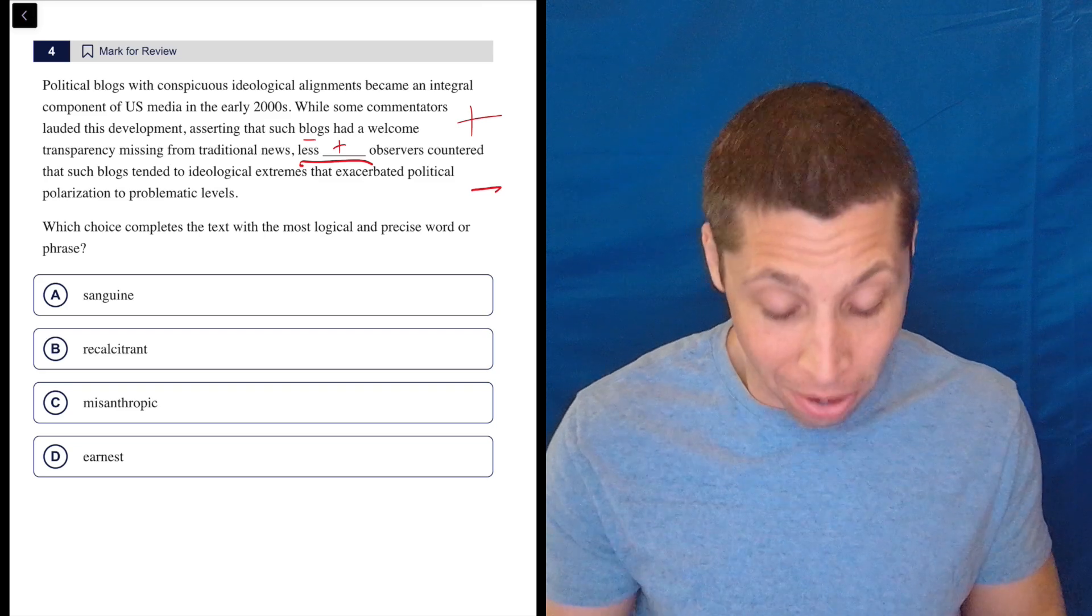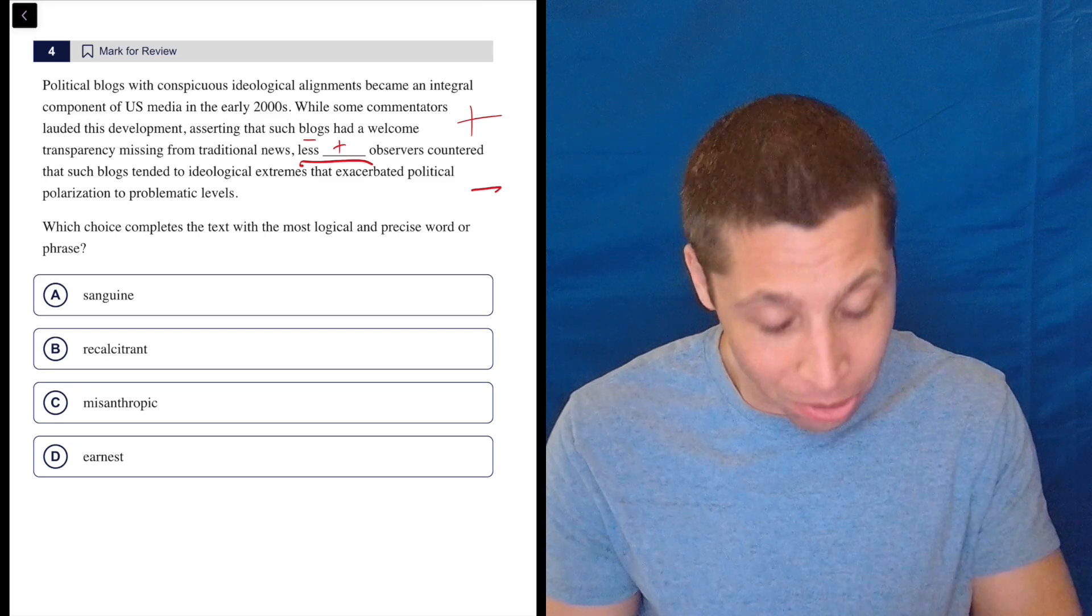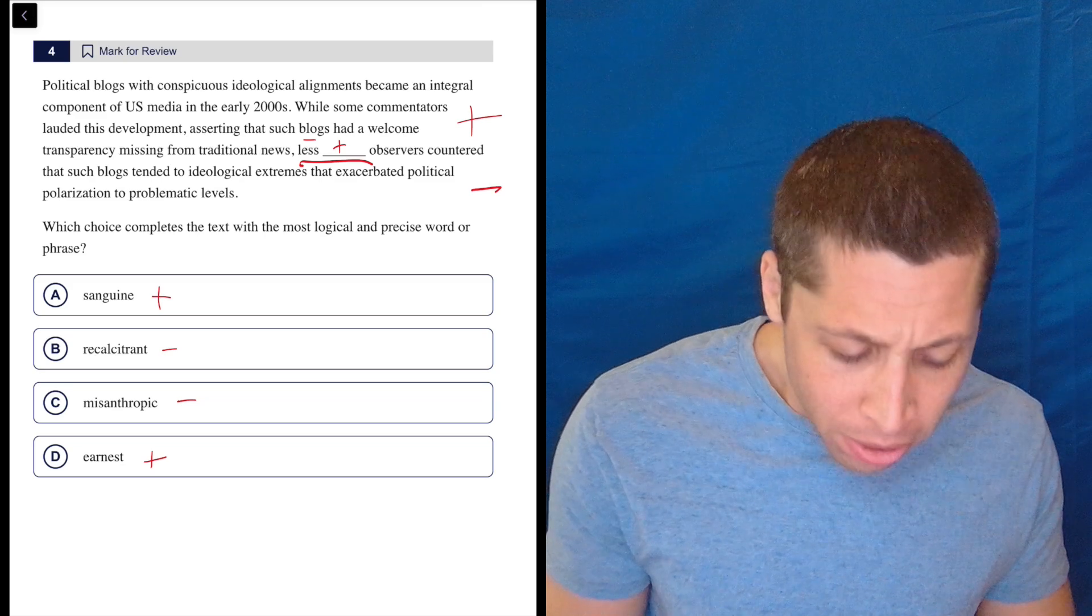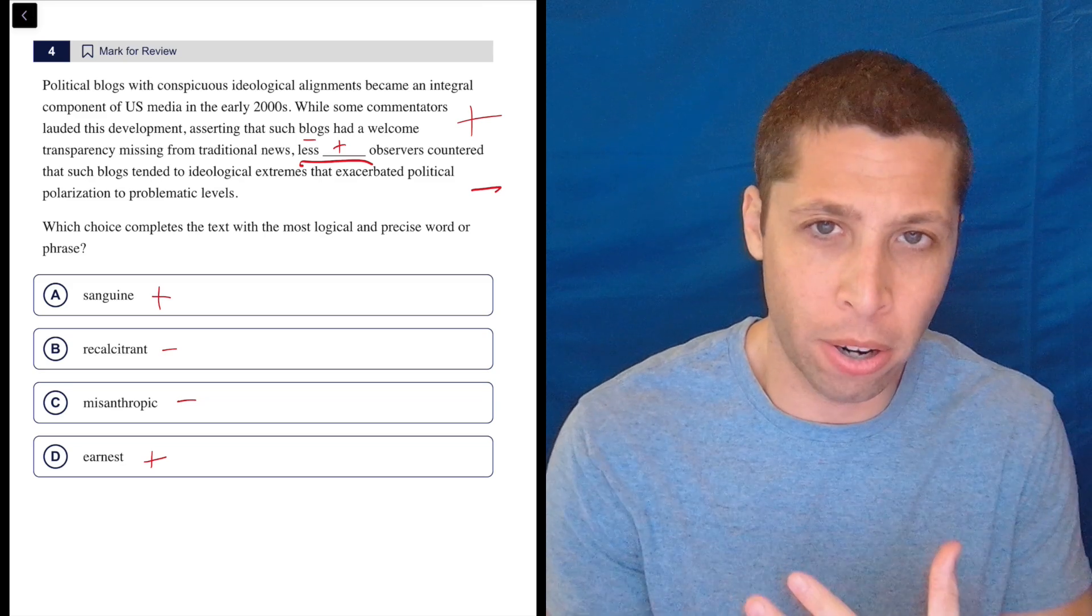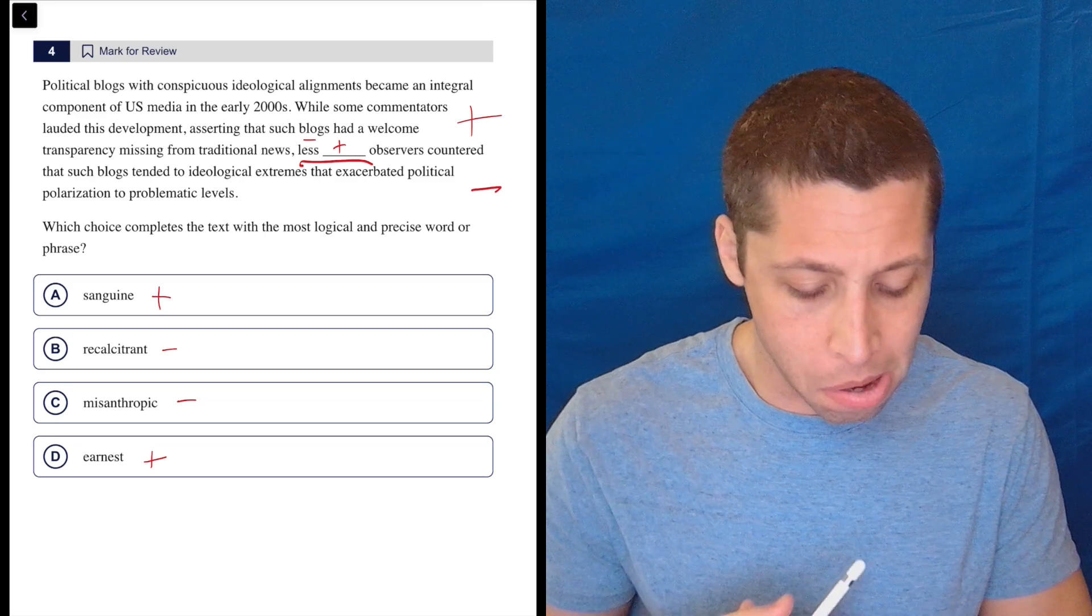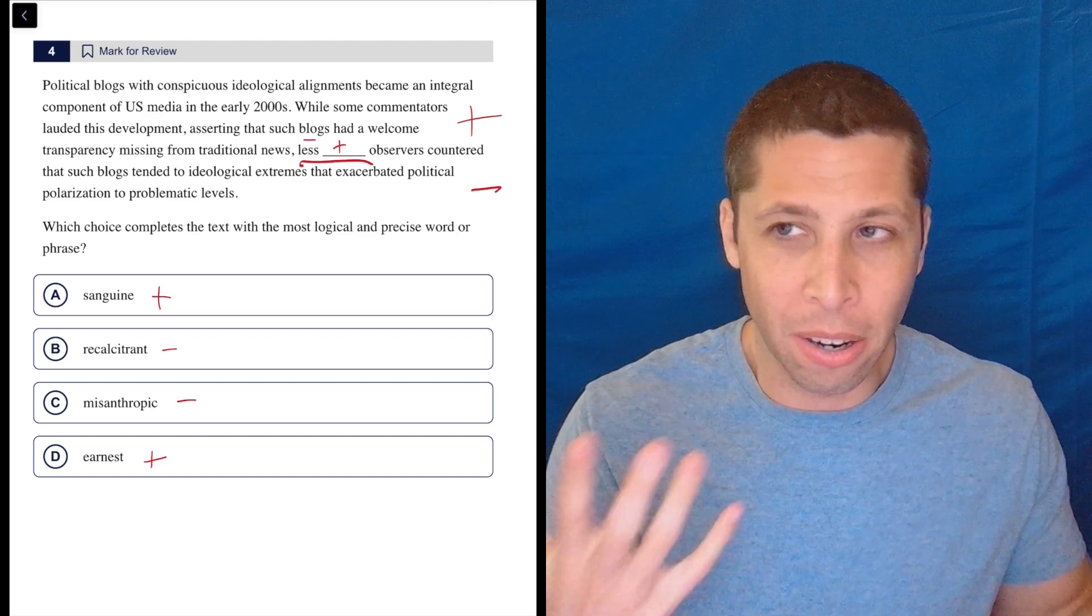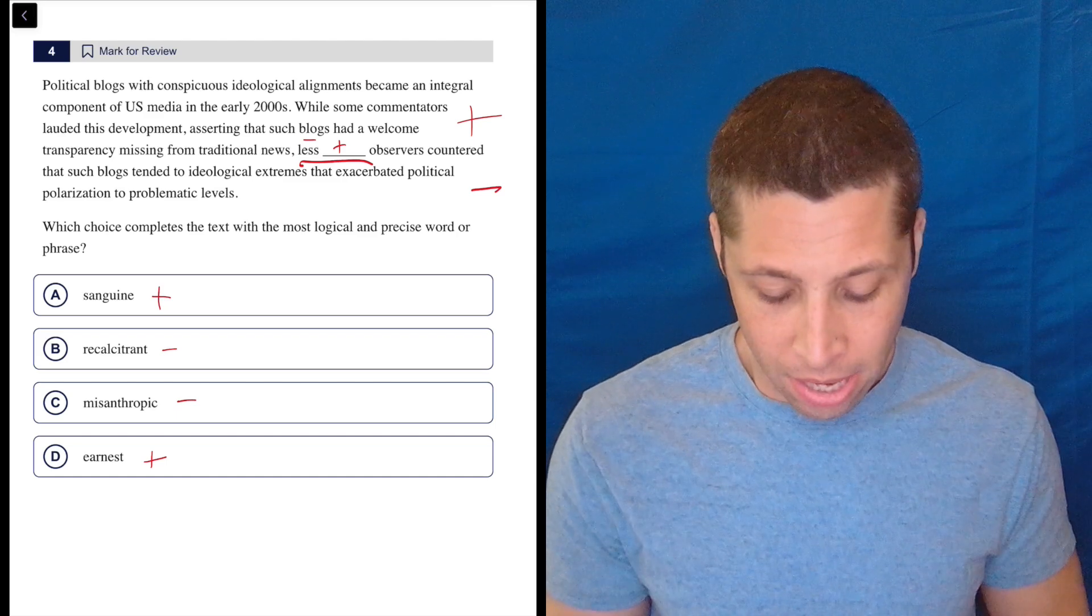Well, just from the connotations and knowing the words positive, negative, negative, positive, less earnest observers, earnest means that you try hard at things. So I don't see what we're trying hard here at all. It doesn't, no one's trying anything. It's just opinions. So that doesn't make sense.